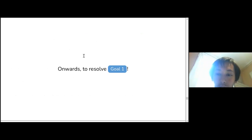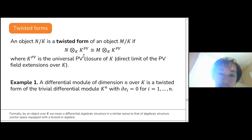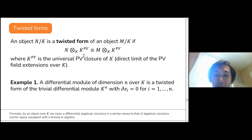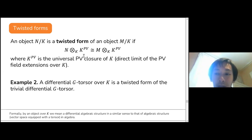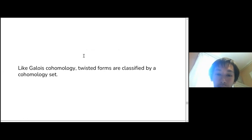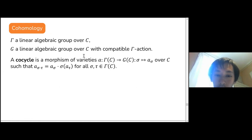To address Goal 1, instead of talking about differential modules directly, we need to talk about twisted forms in a differential setting. An object N is a twisted form of M if over a big enough field they become differentially isomorphic. Any differential module becomes trivial over a big enough field, and any differential torsor becomes trivial as a differential torsor. Just as in Galois cohomology, twisted forms are classified by a cohomology set. Unlike Galois cohomology where groups are abstract, here the groups are linear algebraic groups and maps are morphisms of varieties.